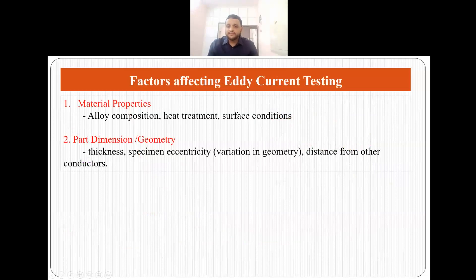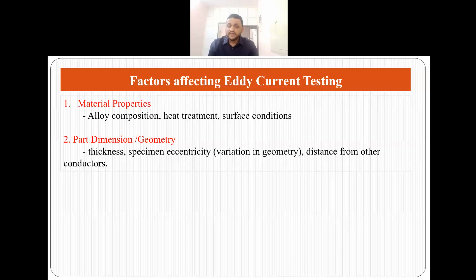Now what are the factors that affect eddy current testing? There are two major factors. First is the material properties: what is the alloy, what is it made of, what is the heat treatment, and what are the surface conditions? The second is the part dimension or geometry: what is the thickness of the specimen, what is the shape of the specimen, and what is the distance between other conductors? Material properties and part dimension or geometry are the major factors which affect eddy current testing.